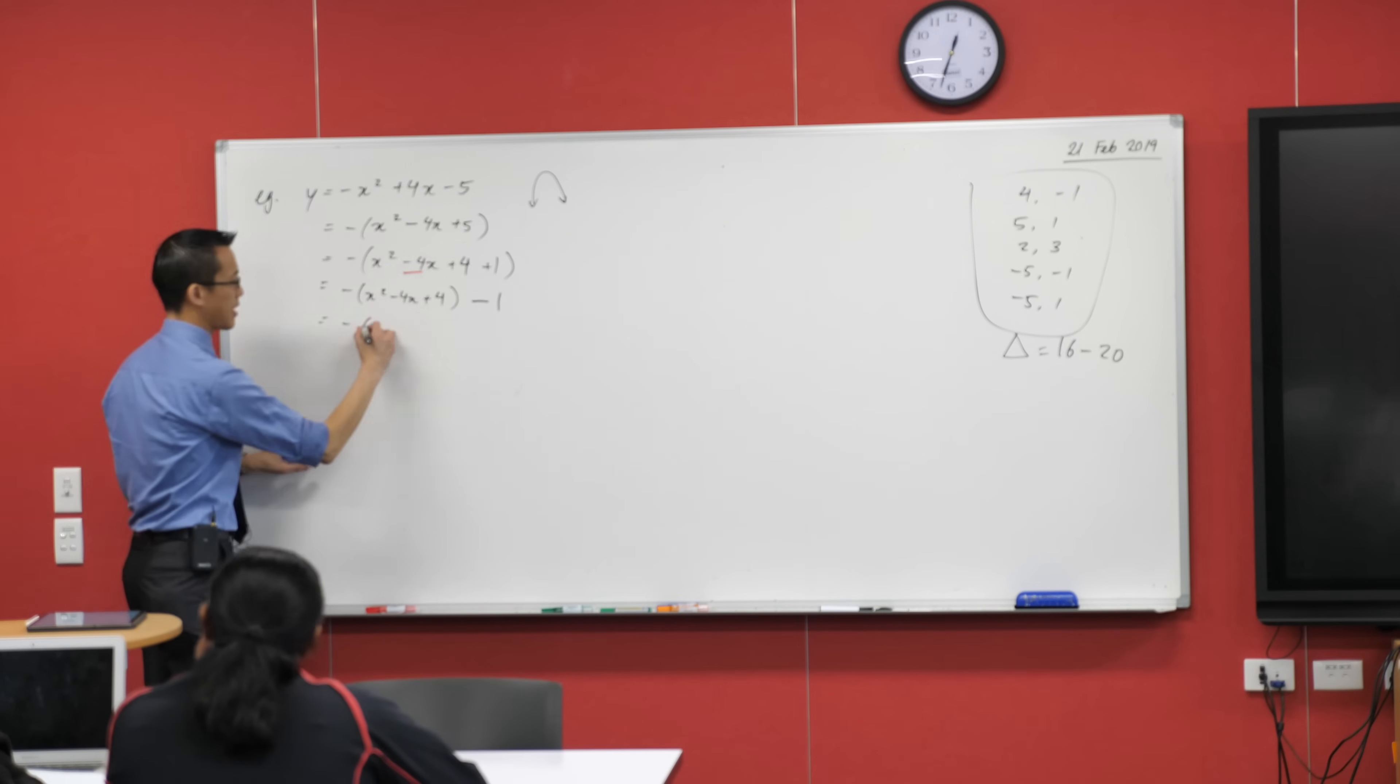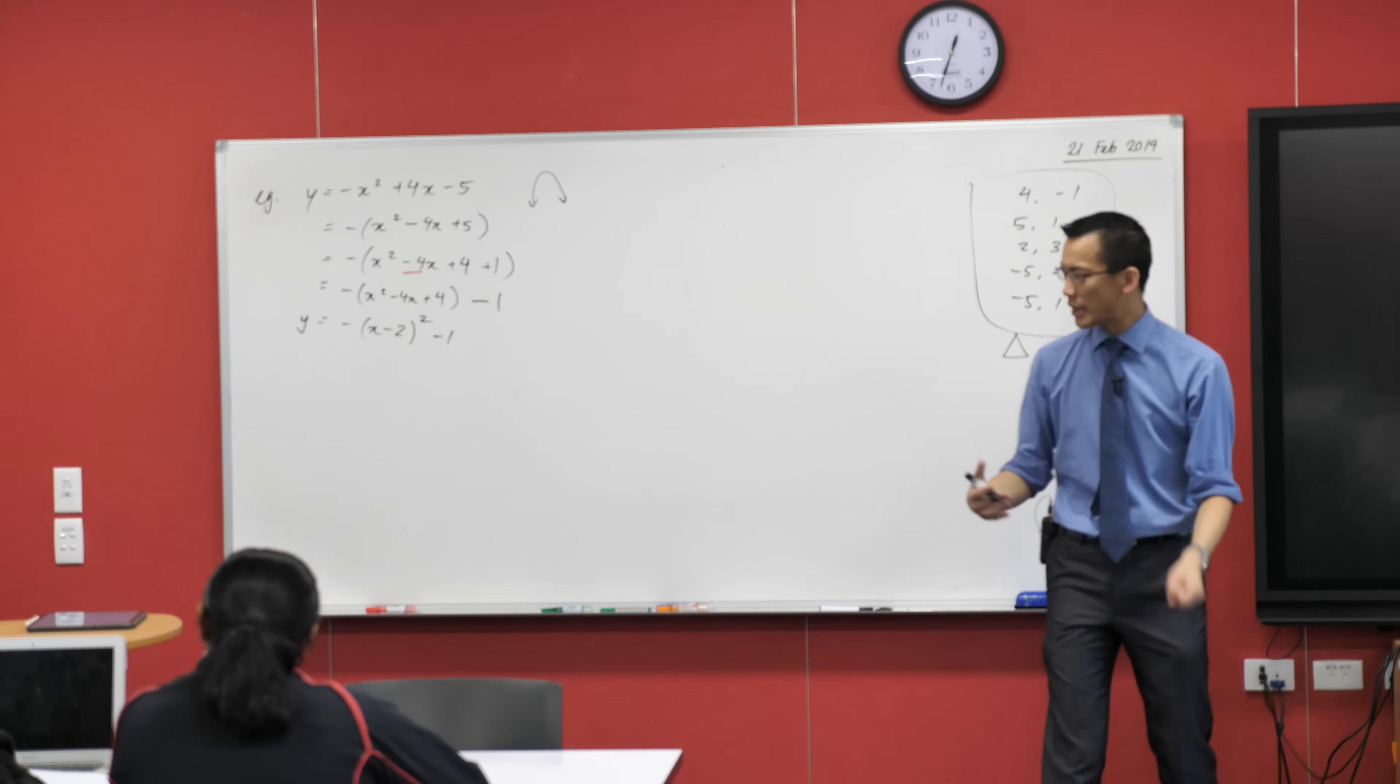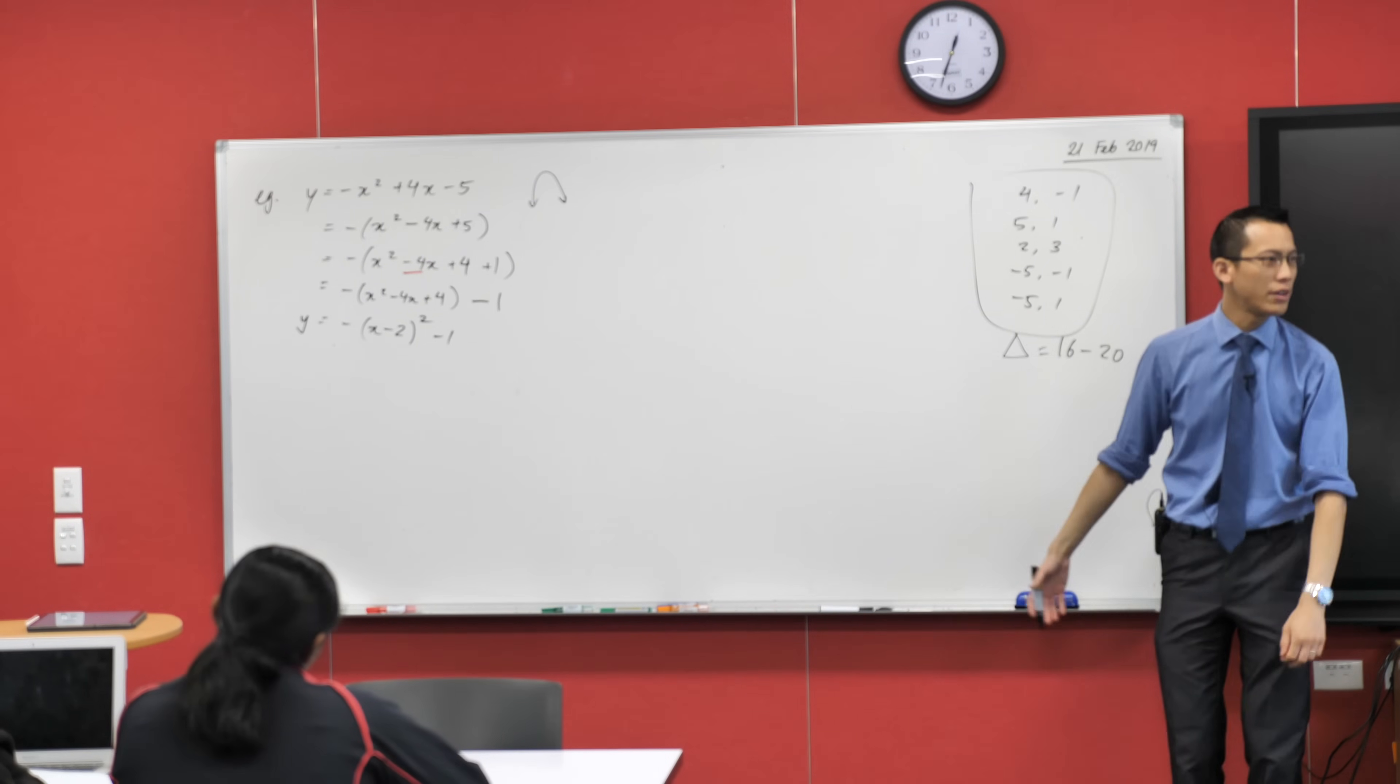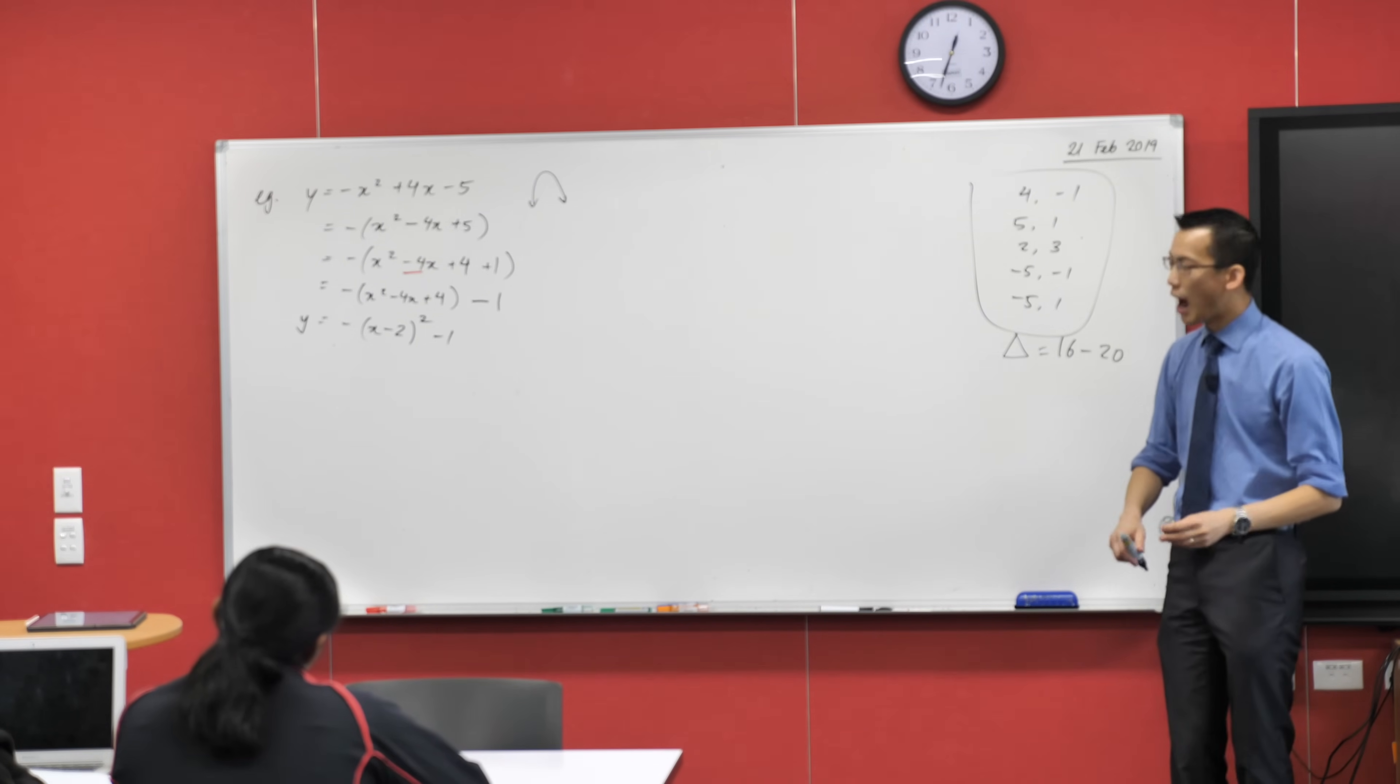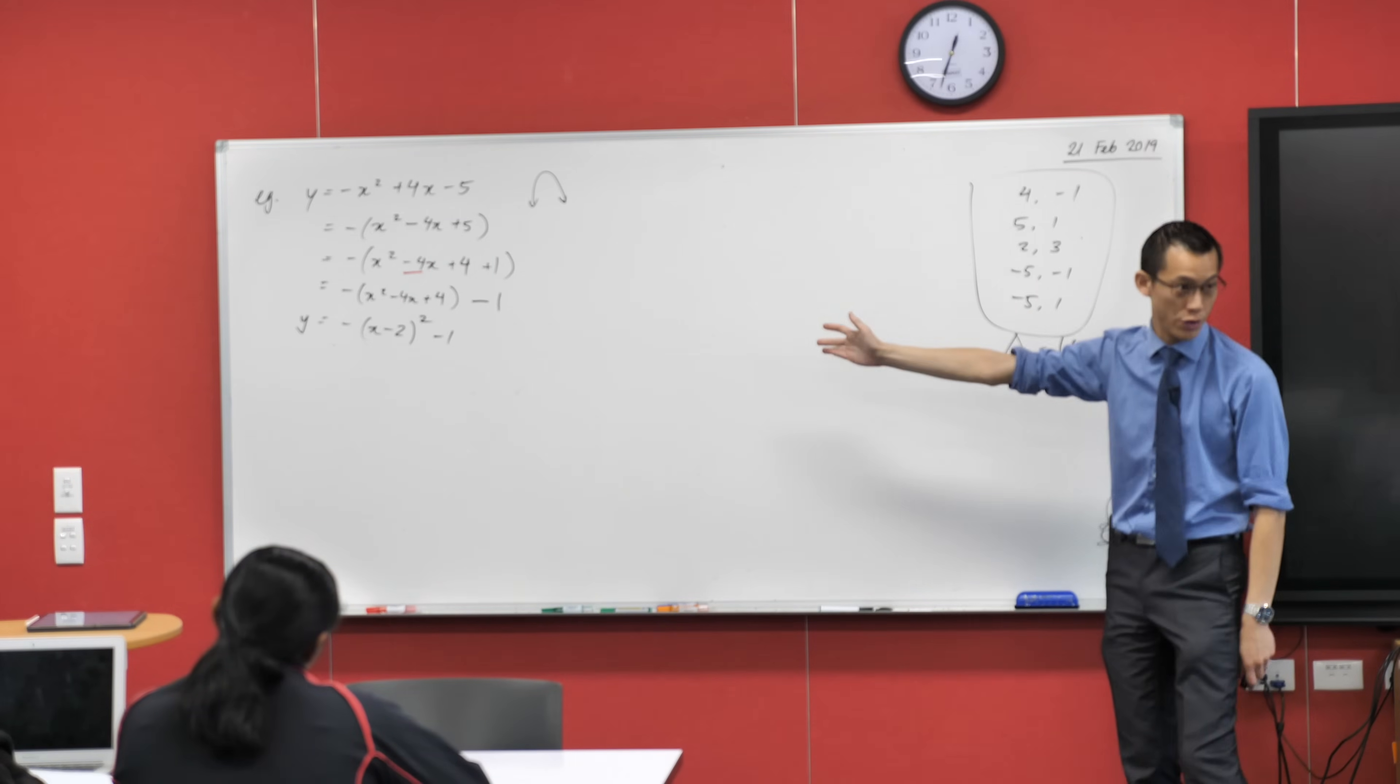So the whole point in me doing this weird thing and writing it in this way was so that I could write it as a square. This thing is something squared. What is it squared? X plus two? Minus, right? It's that guy there. This guy's always positive because it gets squared. But this guy tells us the sign here. Then there's a minus one. So this is what I've got. Now you might think like, what's the point of that? Why is this useful? I can actually read off the axis of symmetry and the vertex immediately just from the way this is written. No other formula is required.